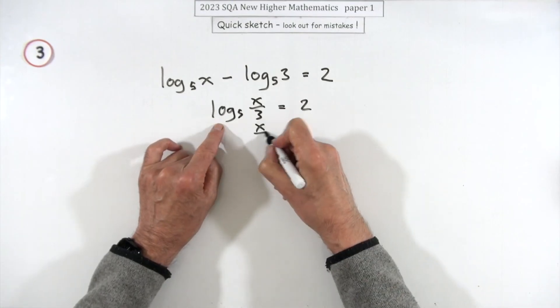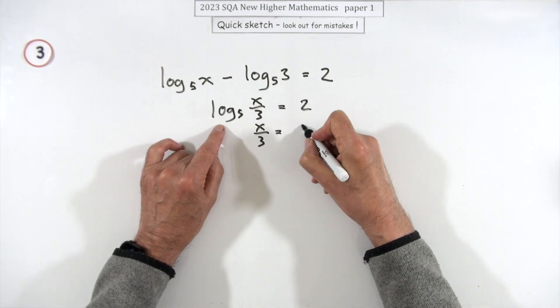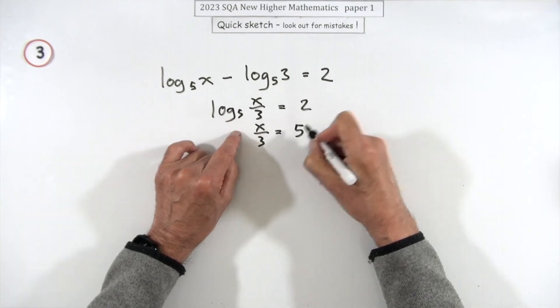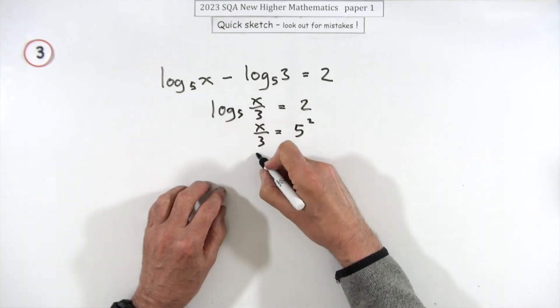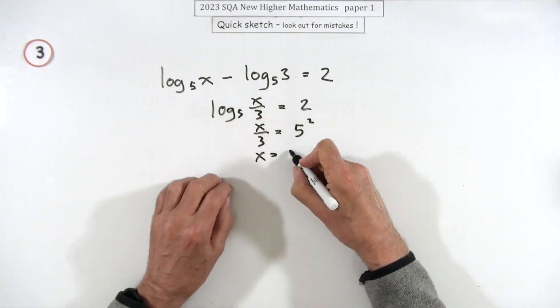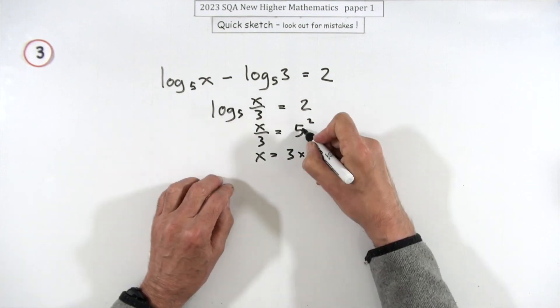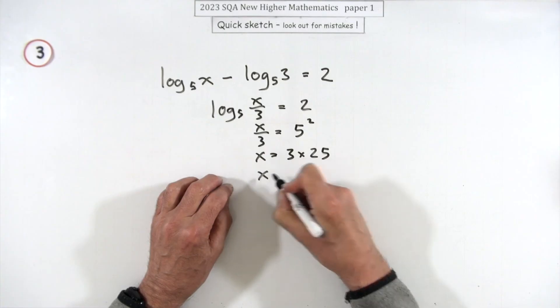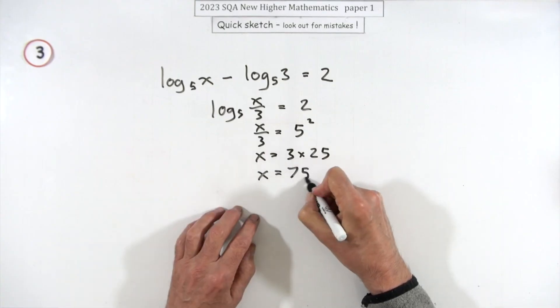And I know that if I want to remove that, then the inverse to that would be, log base 5 is 5 to the power, which means x is going to be taking that 3 across and multiplying that which becomes 25, so x is 75.